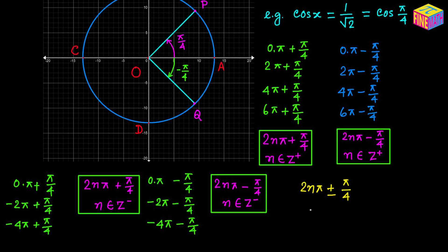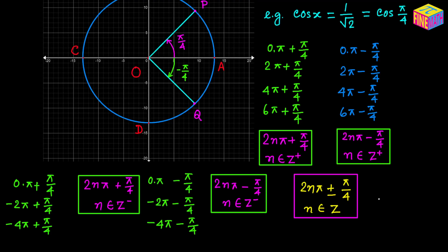Finally, the solution is written as 2n times pi plus or minus pi over 4, where n is an integer — positive, negative, or 0 — and that is the general solution of x for this particular example where cosine of x equals 1 over square root of 2, which equals cosine of pi over 4. Now if we replace pi over 4 with alpha, I am simply going to call it alpha.